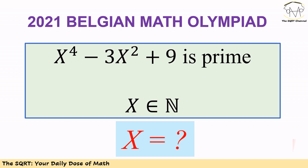Hello everyone. In this video we are going to talk about another problem from the 2021 Math Olympiad. In this problem we have x to the power of 4 minus 3x squared plus 9 as a prime number. We know that x is a positive integer and we want to find all possible values that x can have.